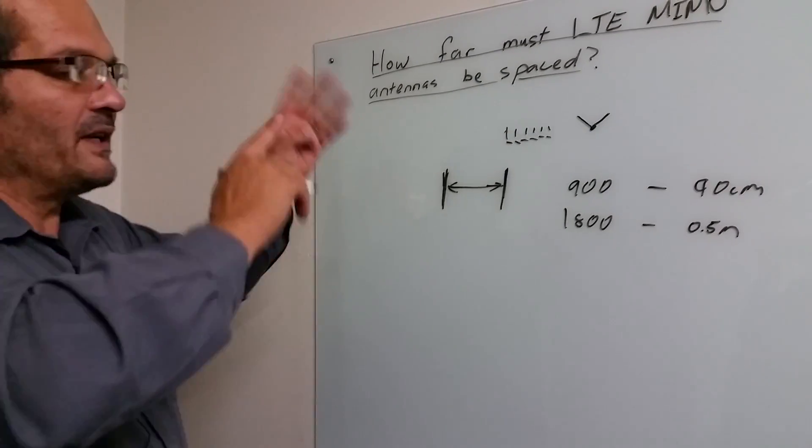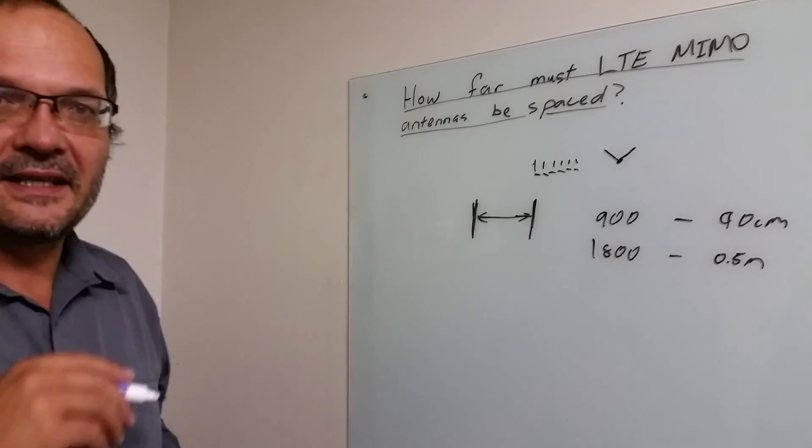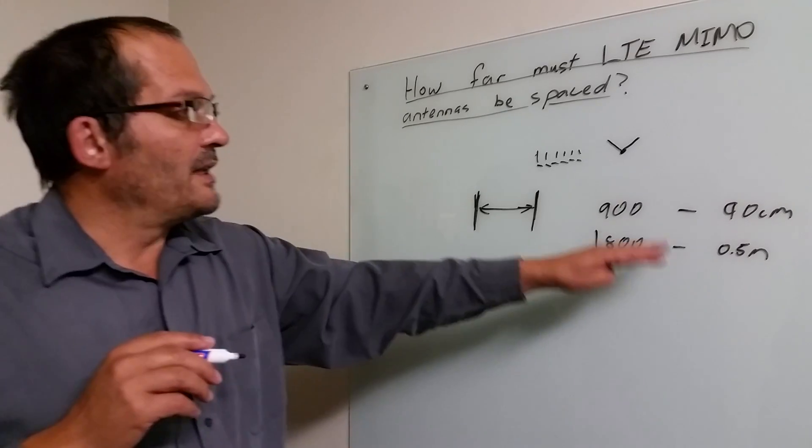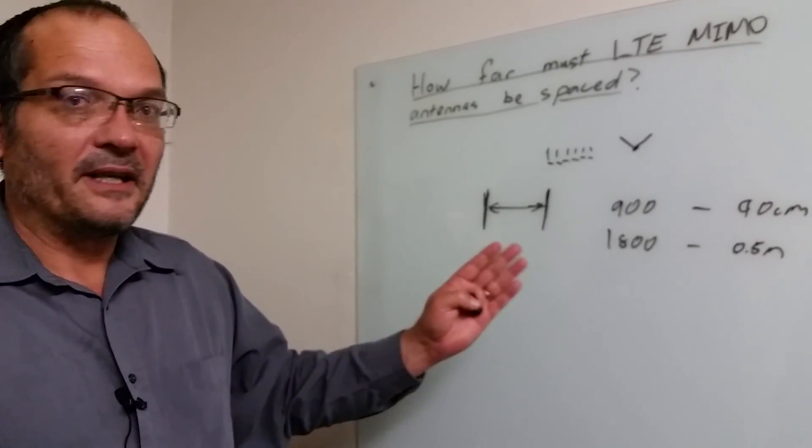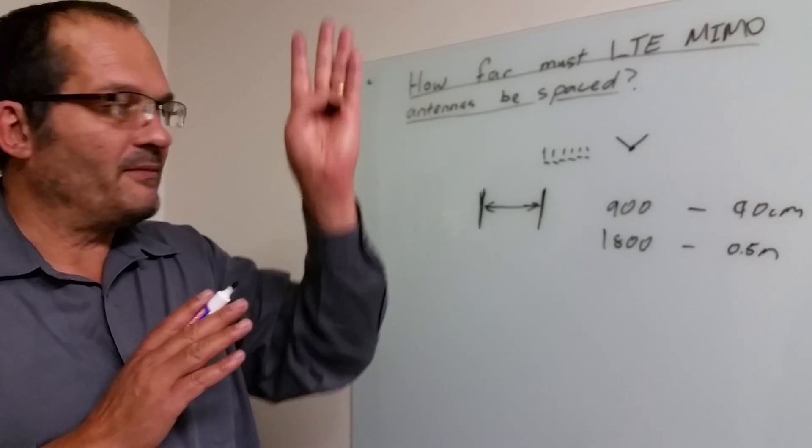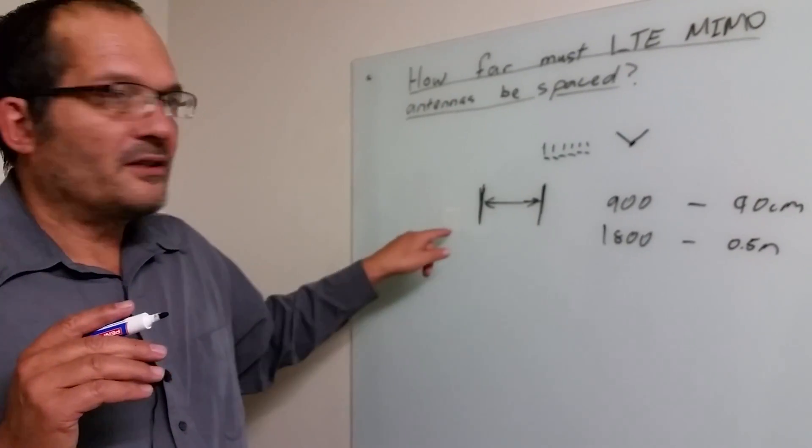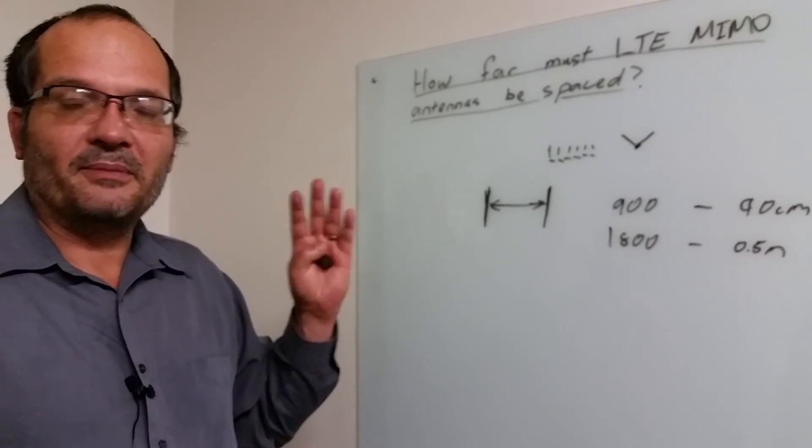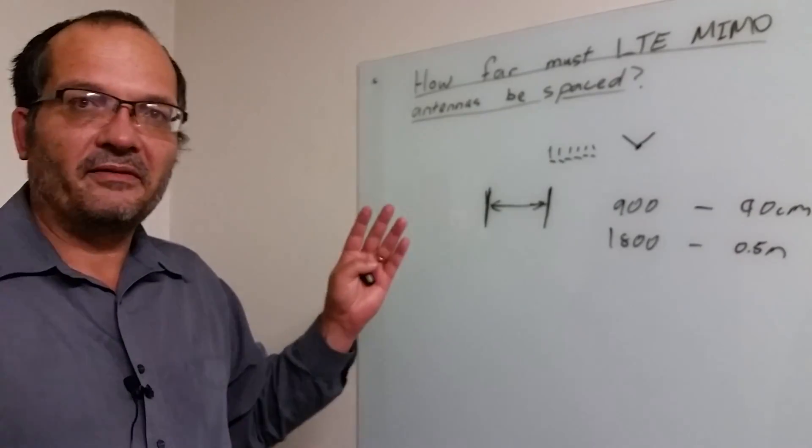That's if they are horizontally spaced. If you vertically space them, use exactly the same rule. By the way, further apart is always better, but that will work. I would recommend that you use horizontal spacing if you've got mountains, buildings, and things where signals can reflect off the sides.